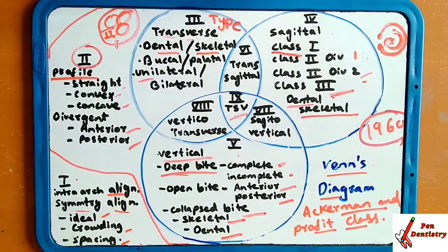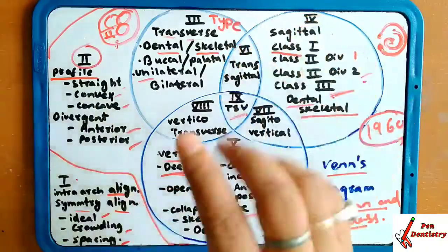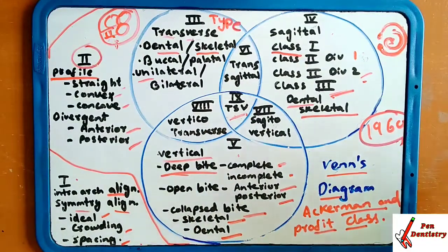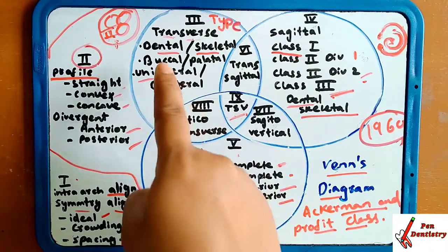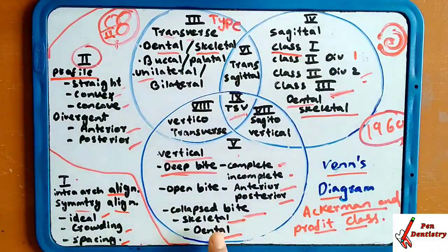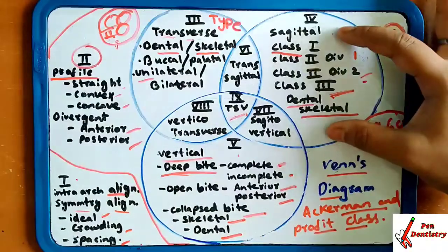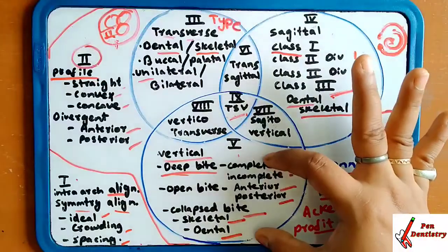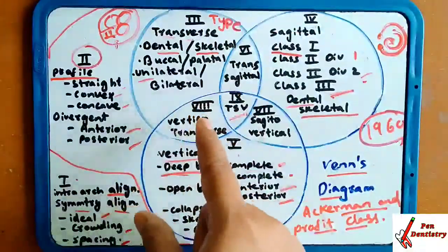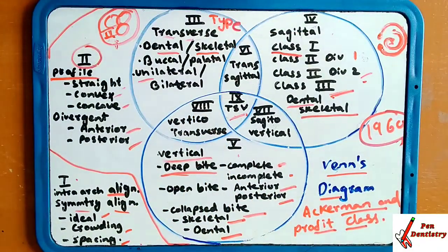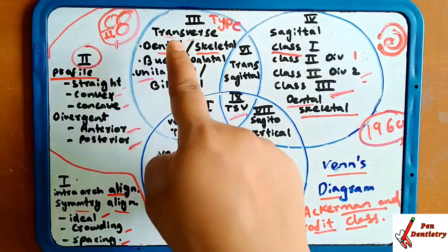This diagram is very easy. First, he has said about the alignment, then profile. In the Venn diagram, there are three circles representing TSV — transverse, sagittal, and vertical. In transverse, sagittal, and vertical, this classification covers the bite and the presence of transverse malocclusion, which you also know from further reading chapters. So the third plane is transverse, sagittal, and vertical.